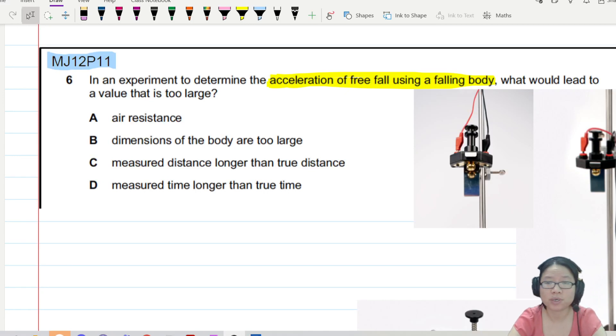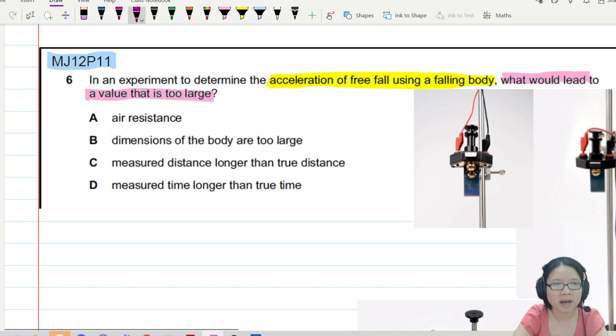Hello there! In this video, we are going to look at an experiment to determine the acceleration of free fall using a falling body. And this question is asking us, in this experiment, what would lead or what kind of systematic or random error could lead to a value that is too large? So that means my A is too large.